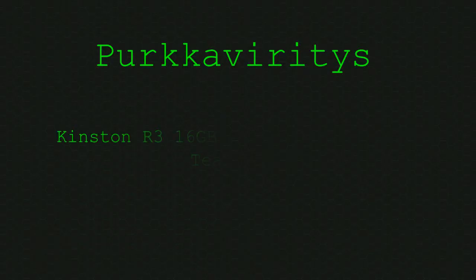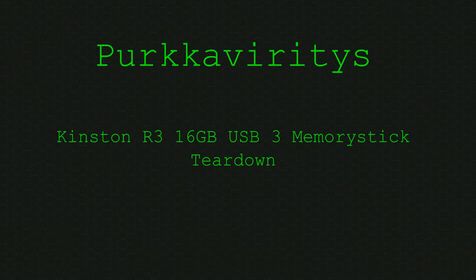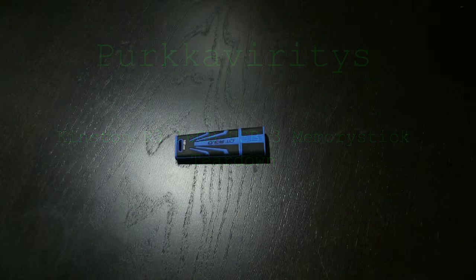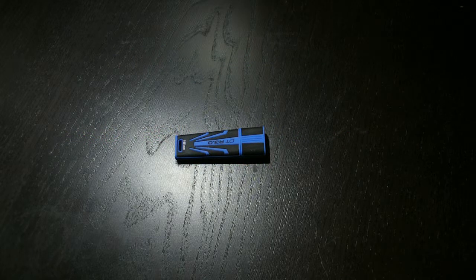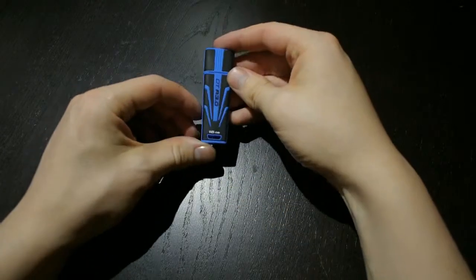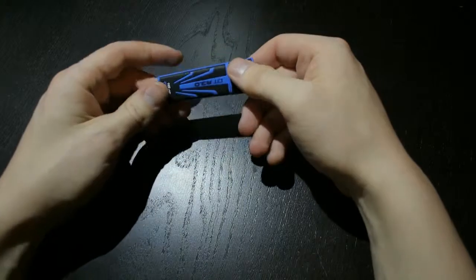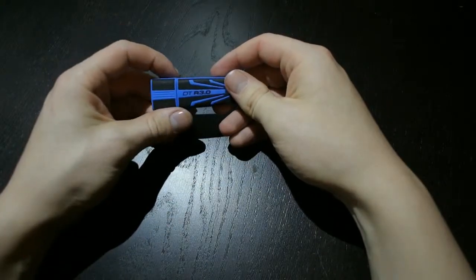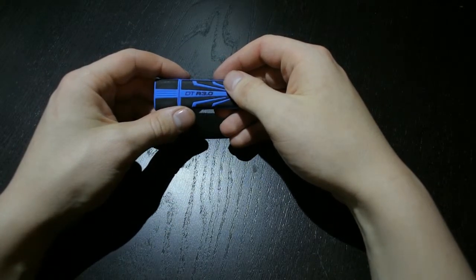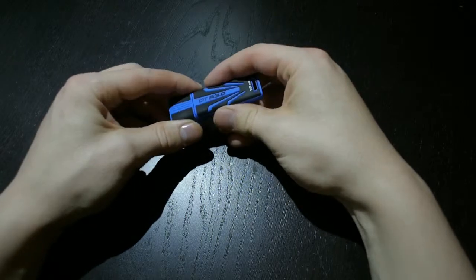Kingston R3 16GB USB 3 rubber memory stick teardown. So here is a DT-R3 Kingston 16GB rubber USB stick that's supposed to be rugged. It died of abuse and doesn't work anymore.